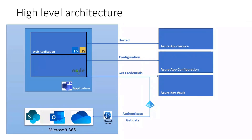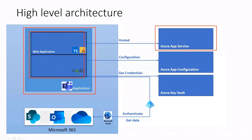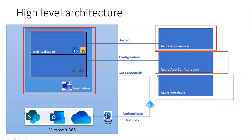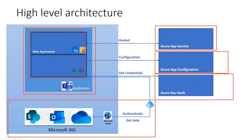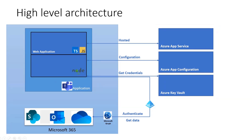As a quick architecture wrap-up: we have our web application — which is a Teams application — hosted in Azure App Service. Configuration mainly takes place in the Azure App Configuration resource, and secrets and credentials are stored inside Azure Key Vault. With that, we can authenticate and get our data from Microsoft Graph and the whole Microsoft 365 ecosystem — SharePoint, OneDrive, Outlook, whatever we need.